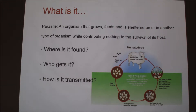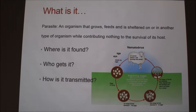Nematodirus is classified as a roundworm that only affects ruminant animals. For clarification, that means it's not going to affect dogs, cats, or swine.